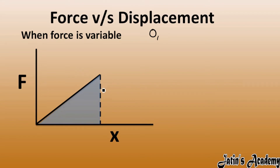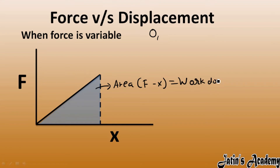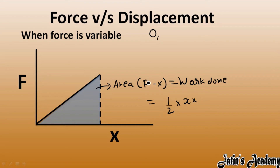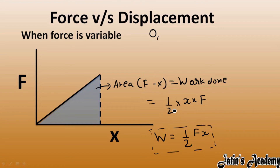So the area under the force-displacement graph gives you work done. For the variable force case, this area is a triangle: area equals one-half times base times height, where base is displacement and height is force. So work done when force is variable equals (1/2) × F × x.